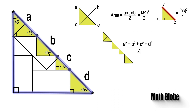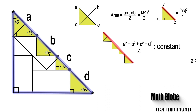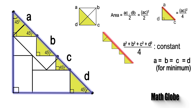So, we will be able to calculate the sum of the areas of 4 triangles. Next, as the length of the hypotenuse of the large triangle is constant, and also for the minimum value of the given expression, all lengths should be equal to each other.